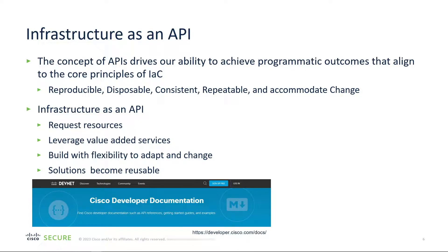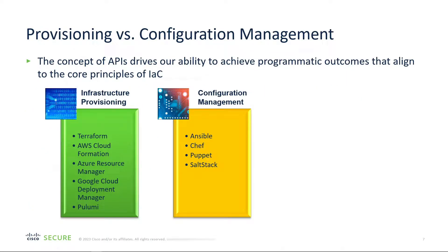Infrastructure as an API means being able to request resources as needed, add services that add value to the business, build with flexibility to adapt and change, and make solutions reusable. DevNet will be your friend here — there's a link to Cisco's DevNet covering many of the programmatic capabilities within the Cisco portfolio. When looking at provisioning versus configuration management, the concept of API drives our ability to achieve that programmatic outcome.